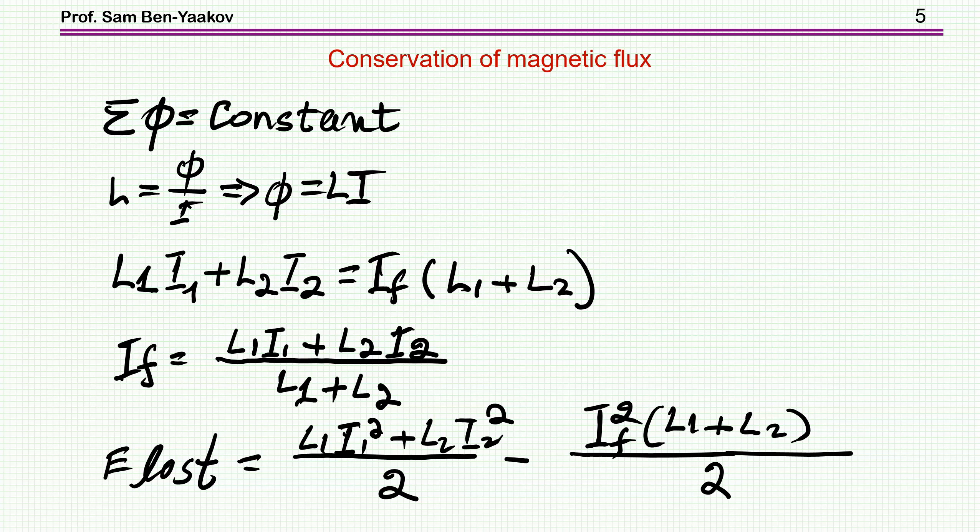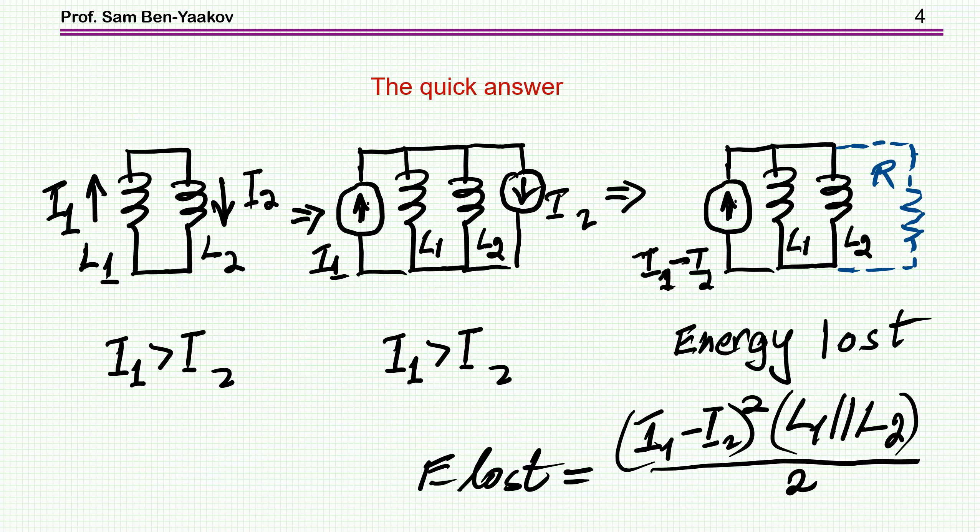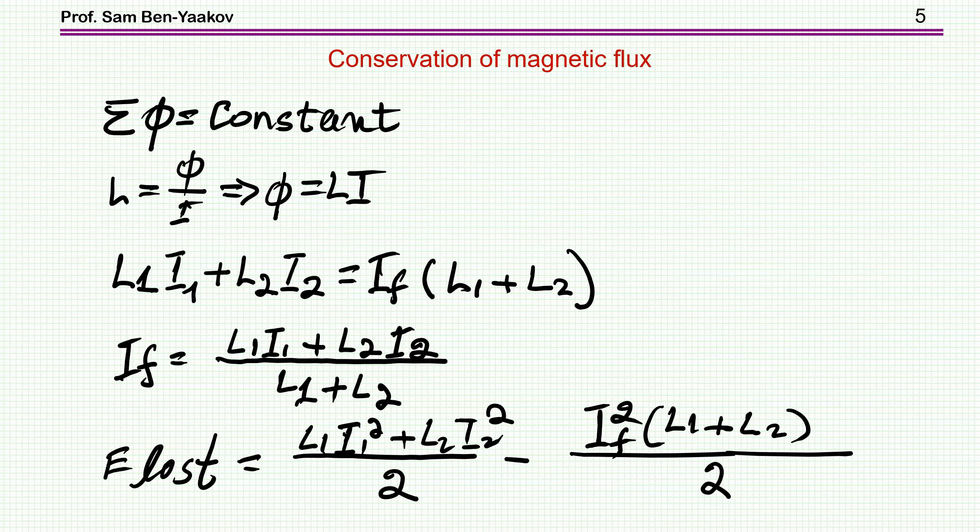Now the energy loss calculated from here will be the energy at the beginning and the energy at the end. Well, it's more lengthy as compared to what we have here, which is kind of immediate. So from here I can get the energy loss, and from here I can get the final value of the current.